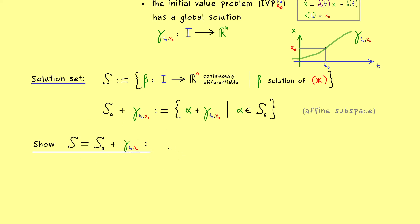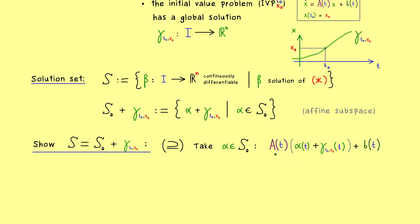To show an equality of sets we need to show two inclusions. Let's start with the first: take an element from the right-hand side and show it lies in the left-hand side. Fix an α from S₀, then take our system of ODEs but substitute α + γ for x. More precisely, for every point t we have A(t) times (α(t) + γ(t)) plus b(t). We can simply use the linearity of the matrix-vector multiplication, giving A(t)α(t) + A(t)γ(t) + b(t).